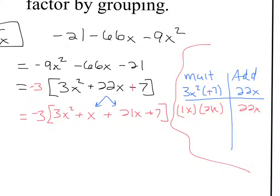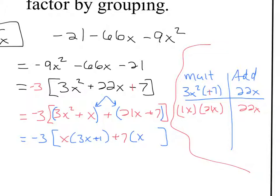Once you have four terms, do the same thing as the assignment from yesterday: factor by grouping. Group terms together that have common factors — group 3x squared plus x together, and group 21x plus 7 together. Notice there's a plus sign between the groups; that's extremely important. I'm going to bring down my original GCF of negative 3 and find the GCF of each group. This first group has a GCF of x; factoring that out leaves 3x plus 1. The next group has a GCF of 7; factoring that out leaves 3x plus 1.